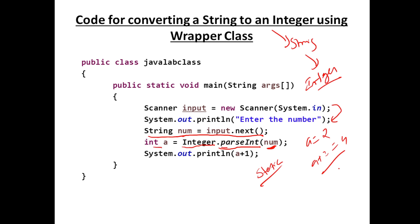You might ask: why get the number as a string and then convert? This depends on your application. When working with form-based applications, whatever the user enters comes in as text. Even if they enter marks, it comes in as a string. So you have to convert it to an integer to perform calculations using 'Integer.parseInt(string)'.